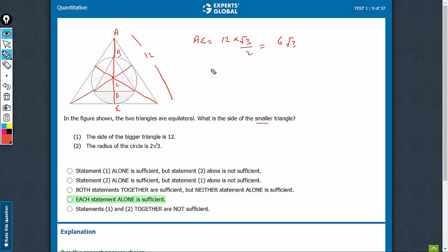So this would mean that CE is 1 third of this. This is going to be 2 root 3. And AC is going to be twice of CE. So this is going to be 4 root 3.